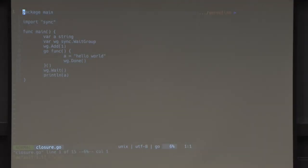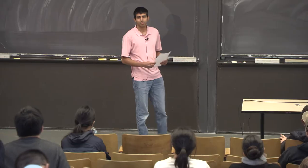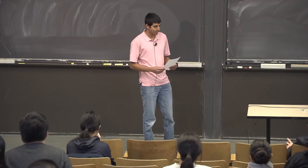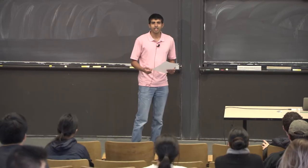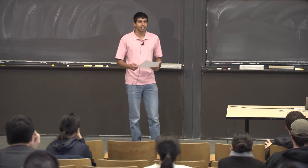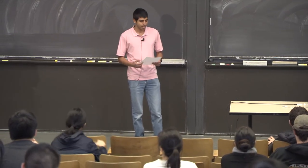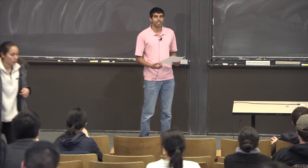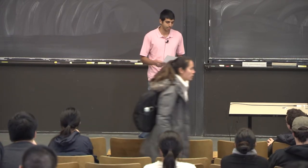Today, the TAs are going to be giving a lecture on concurrency in Go. This lecture is going to be full of design patterns and practical tips to help you with the labs. We're going to be covering briefly the Go memory model, the reading which we went over, and then spend most of the lecture talking about concurrency primitives in Go, concurrency patterns in Go, how you do things that you will need to do in the labs. And then finally, we'll talk through some debugging tips and techniques and show you some interesting tools that you might want to use when debugging the labs.